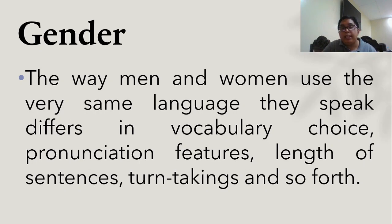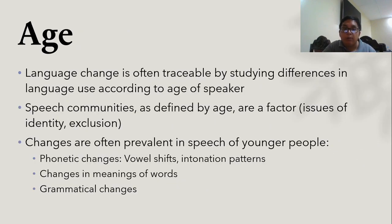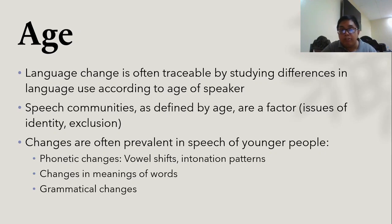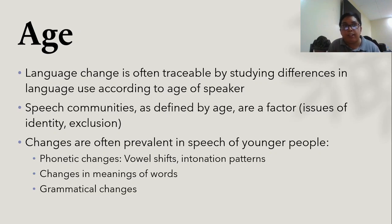That is how gender can affect language use. Similarly, we have age. Language change is often traceable by studying differences in language use according to the age of the speaker. Speech communities defined by age are a factor for issues of identity or exclusion, and changes are often prevalent in the speech of younger people. Such changes include phonetic changes, vowel shifts, intonation patterns, changes in the meanings of words, and grammatical changes. As time passes, growth also comes in your linguistic structure — the more you speak, the more your speaking style grows.